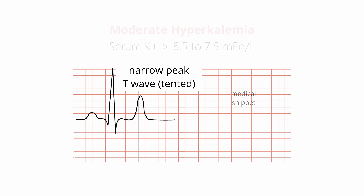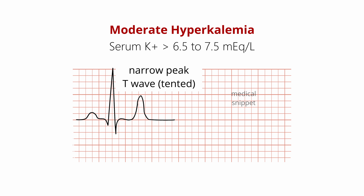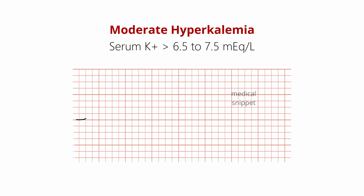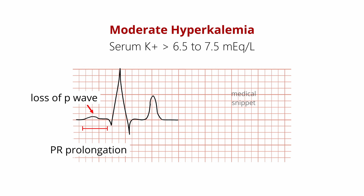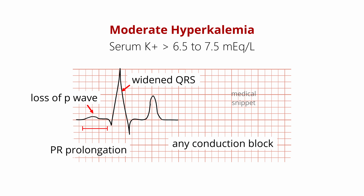As the serum potassium further rises, there is diminution or loss of P-wave. There is prolongation of PR interval and widening of QRS complex, and any kind of conduction block can occur.